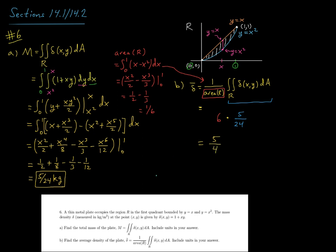And the units there, we just have the same units as delta itself, because we're finding the average density, so it'd be kilograms per square meter. All right, that is going to do it for this question. Thanks.